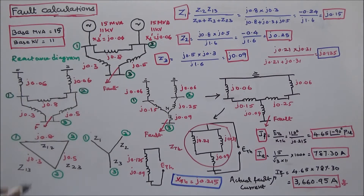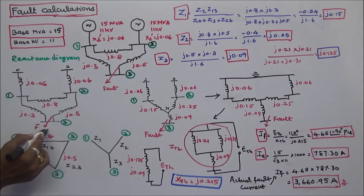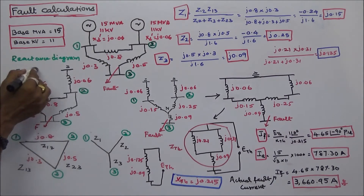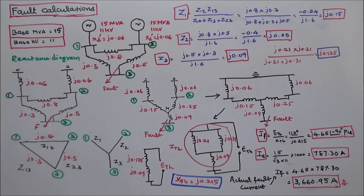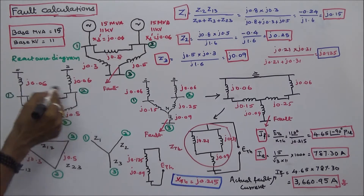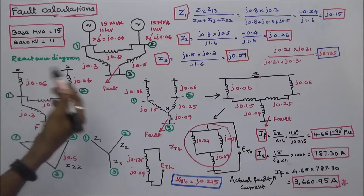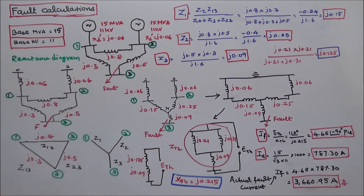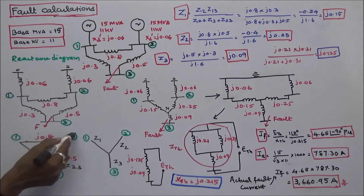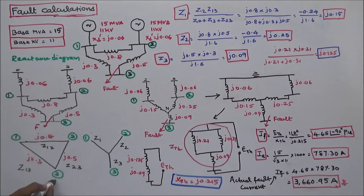If a fault occurs at bus 3, I have to calculate the total reactance from the fault point up to the neutral point. This network forms a delta, which I can convert into a star. The buses are labeled as bus number 1, 2, and 3.